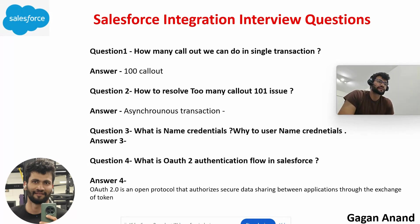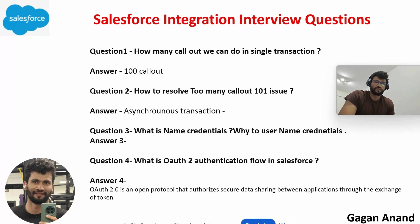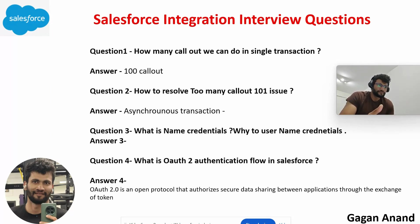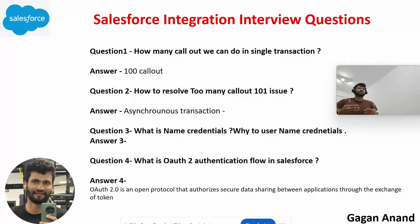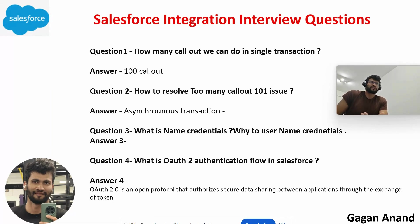Second question: how to resolve the 'Too many callouts: 101' issue. Let's suppose you cannot reduce your callout limit and you have to do more than 100 callouts in a single transaction. The simple answer is asynchronous transactions — we can use Queueable transactions and segregate the callouts. In one queue we can do 10 callouts, in a second queue we can do 10 callouts. You can also try to use a batch class, but Queueable is recommended to resolve this issue — batch is not recommendable.